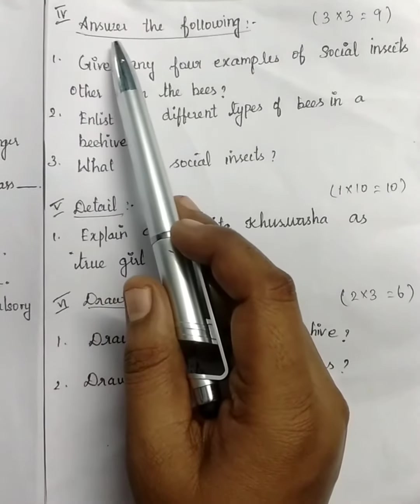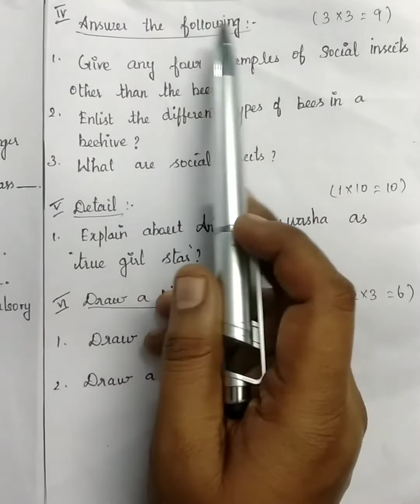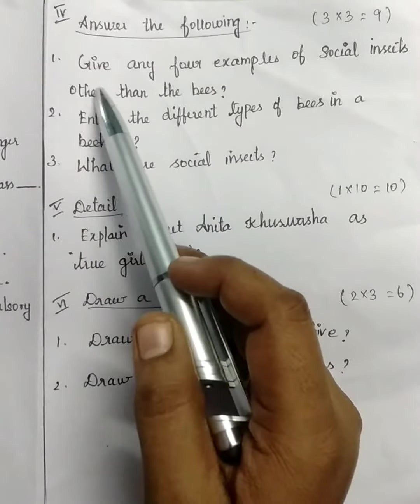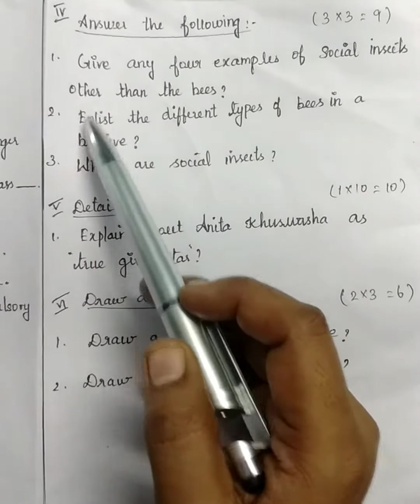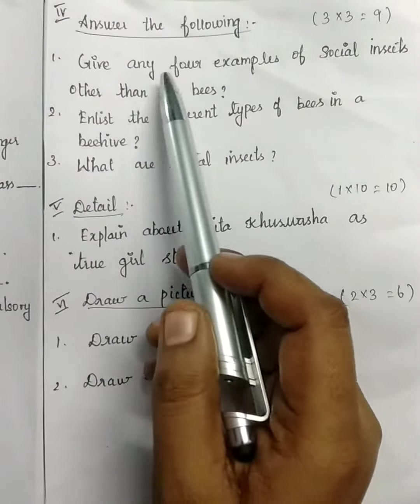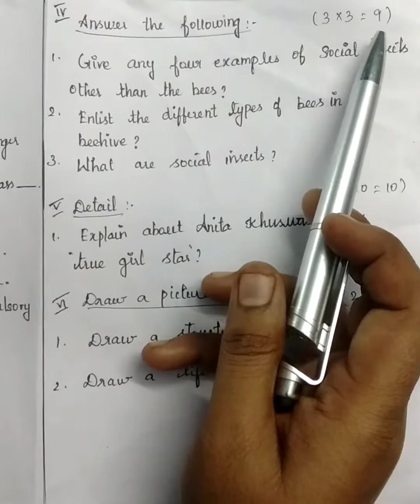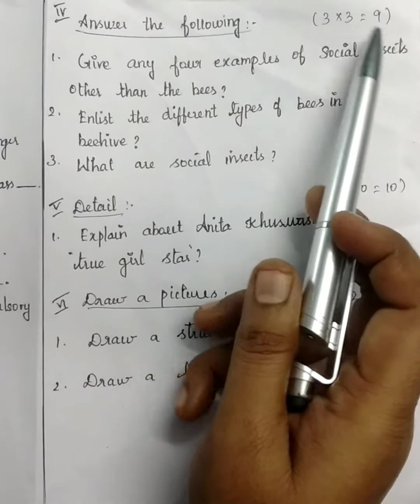In the fourth Roman letter, answer the following. In answer the following, 3 questions are there. Each question carries 3 marks, totally 9 marks.